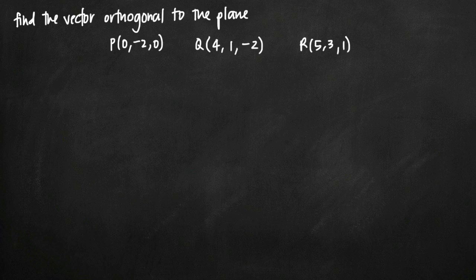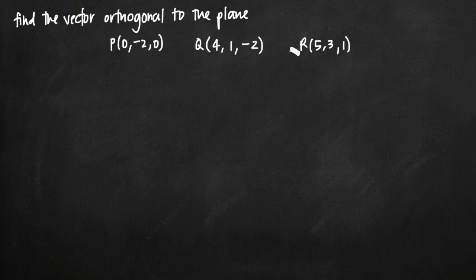Today we're going to be talking about how to find the vector which is orthogonal to a plane. In this particular problem, we've been asked to find the vector orthogonal to the plane defined by three points: P(0, -2, 0), Q(4, 1, -2), and R(5, 3, 1). Our plane passes through these three points, so we need to define the plane and then find a vector which is orthogonal to it.